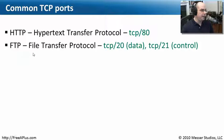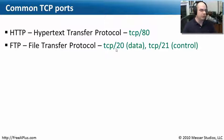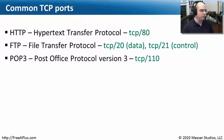For FTP — the File Transfer Protocol — FTP actually uses two ports. One is for data and one is for controlling the communication between the two. Data is sent over TCP port 20, and the control is sent over TCP port 21. Pretty easy to remember: they're right next to each other, numbers 20 and 21.